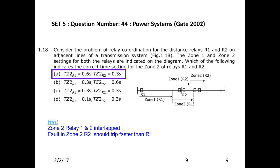The timing for Zone 2 of R2 should be lesser than Zone 2 of R1, so choice A is correct. Generally, relay coordination is done in two ways: the time graded principle, where incremental time settings are applied to the faulty system, and the current graded principle, where current settings are set at incremental values.